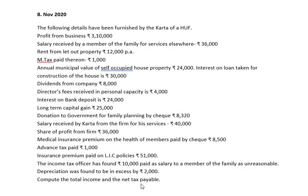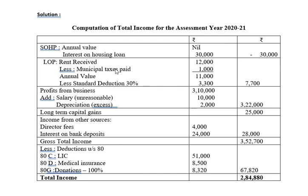Let us compute the total income and net tax payable. Computation of total income: first is house property — self-occupied house property has annual value nil, but there is interest on housing loan Rs. 30,000, so there is loss from house property of Rs. 30,000. For let-out property: rent received Rs. 12,000, municipal tax Rs. 1,000, so annual value is Rs. 11,000. Less standard deduction at 30% on Rs. 11,000 is Rs. 3,300. Income from let-out house property is Rs. 7,700. Profits from business Rs. 3,10,000, add unreasonable salary Rs. 10,000 and excess depreciation Rs. 2,000. So profit from business is Rs. 3,22,000.